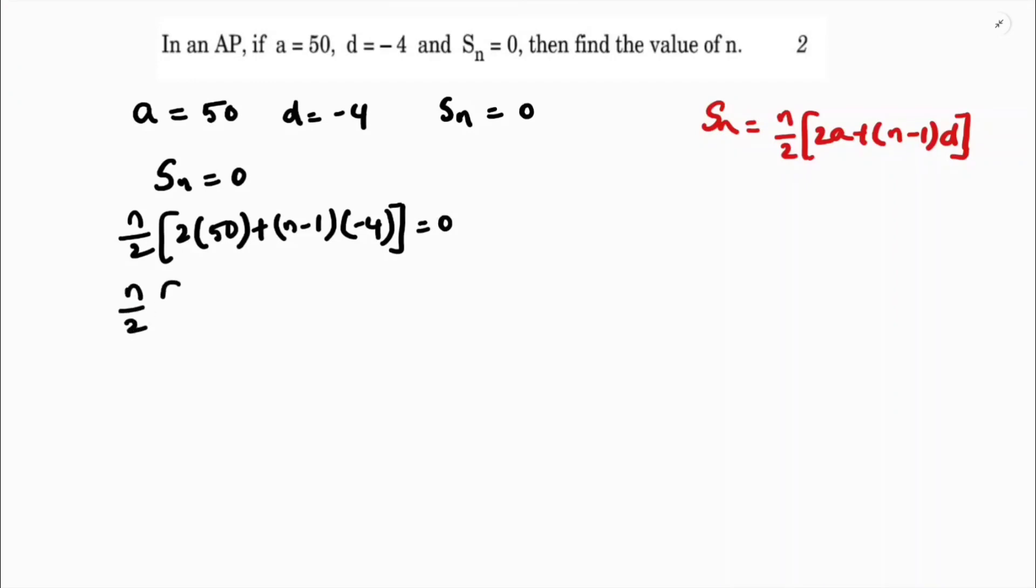So, n by 2, 2 times 50 is 100, plus here n into minus 4 is minus 4n. Minus into minus 4 is plus 4, equals 0. So, if I transpose this 2 here, it will become 0. So, n into 100 minus 4n plus 4 equals 0.